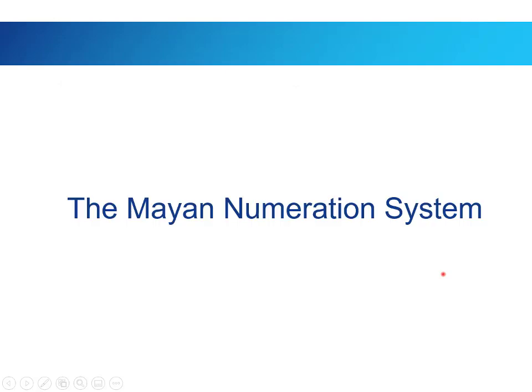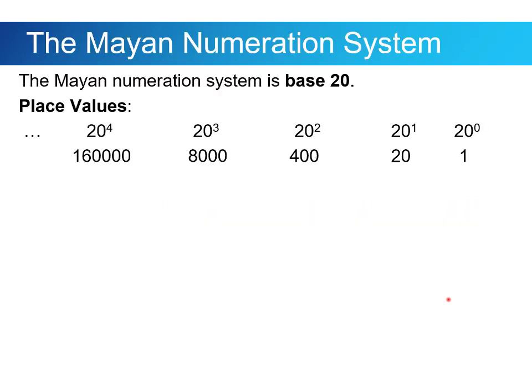Let's talk about the Mayan numeration system. The Mayan numeration system is actually base 20. So their place values, again on the right, start with 1, and then go up to 20, and then 20 squared, which is 400, 20 cubed, 8,000, 20 to the fourth, 160,000, and they could continue on after that. So in their lowest place value, they need to write the numbers 1 through 19.